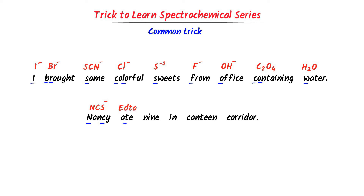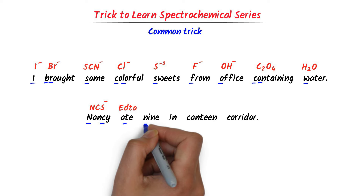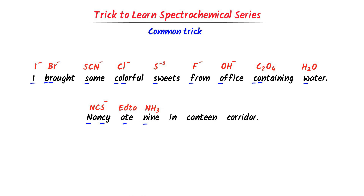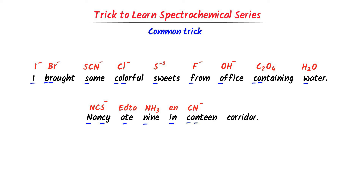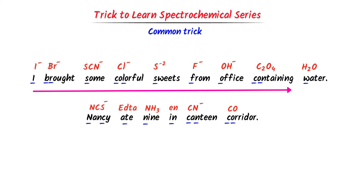'N' and 'C' stands for NCS, which reminds us of EDTA. 'N' stands for NH3, the next 'N' reminds us of ethylenediamine (EN), 'CN' stands for cyanide, and 'CO' stands for carbonyl. Remember that iodide is the weakest field ligand and carbonyl is the strongest field ligand. Using this mnemonic, we can easily learn the spectrochemical series in less than a minute.